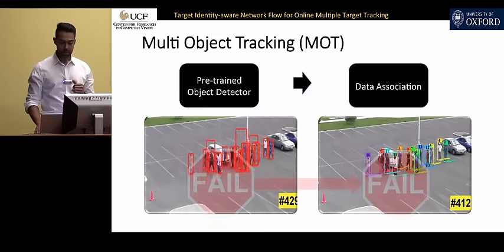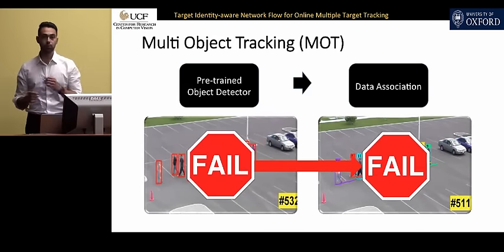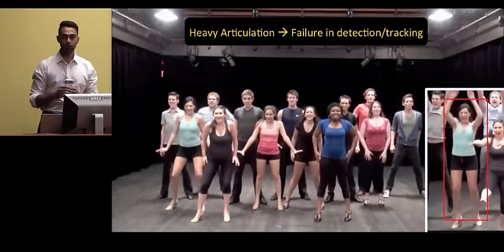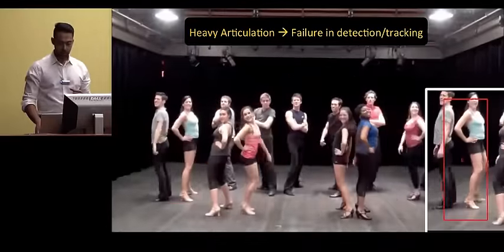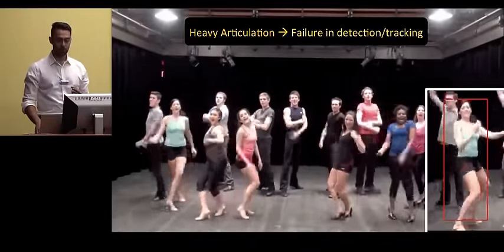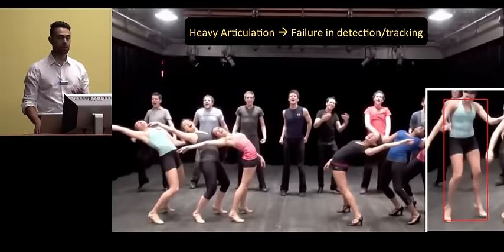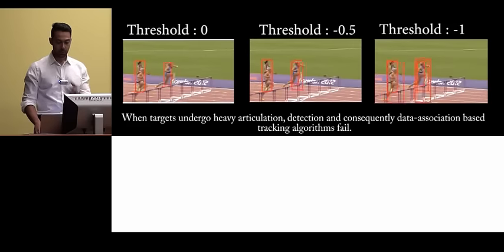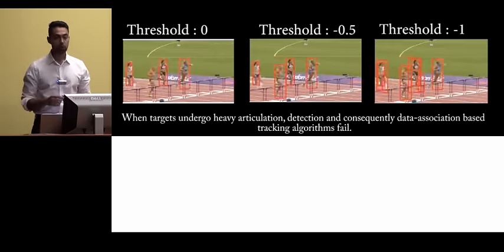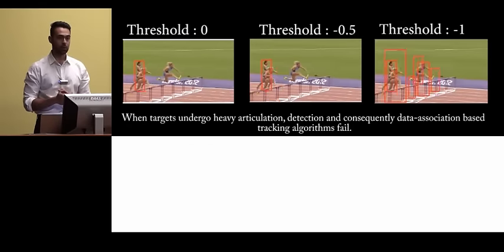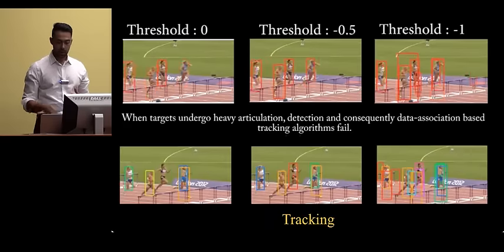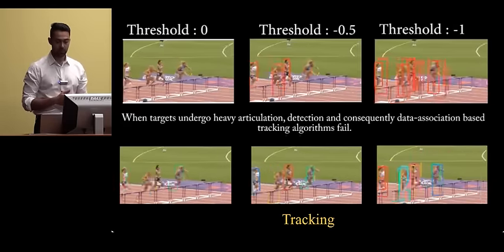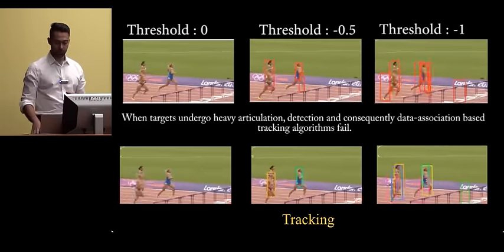The problem with these methods is that if the object detector fails, most probably the tracker would also fail. For example, consider scenarios where targets are going under heavy articulation and heavy pose changes — a pre-trained object detector would fail because it hasn't been trained on such scenarios. You can also see a running sequence where we have four persons running and even reducing the detection threshold, we are just increasing false positives. Failure in detection would cause very poor tracker performance as well.